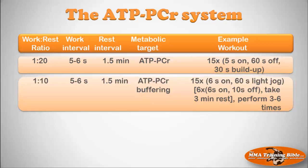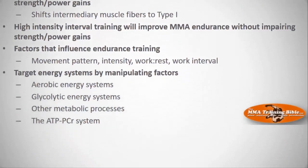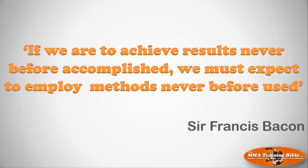To summarize: long slow distance training will improve aerobic fitness, but it will also impair your strength and power gains by causing a shift in intermediary fibers from type 2 toward type 1. High intensity interval training will also improve aerobic fitness without as great a reduction in strength and power. The key factors influencing endurance training are movement pattern, intensity, work-to-rest ratio, and work interval length. By manipulating these you can target the aerobic system, glycolytic system, other metabolic processes, and the ATP-PCR system. Next session we'll explore the structure and function of muscle.